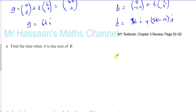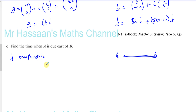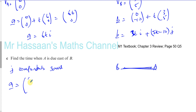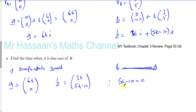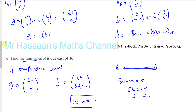Then it says find the time when A is due east of B. If A is due east of B, they're at the same horizontal level, so they have the same j components. The position vector of A has j component 0, and B has j component 5t minus 10. So when 5t minus 10 equals 0, we get t equals 2. So the time is 2 hours after noon, which is 1400 hours.